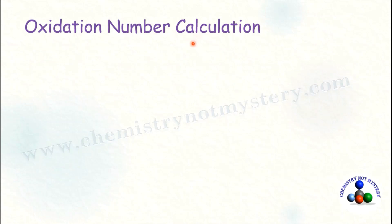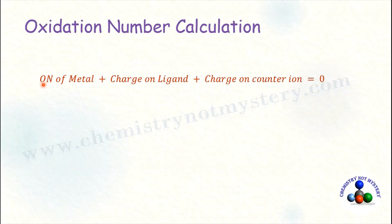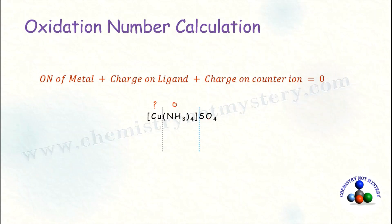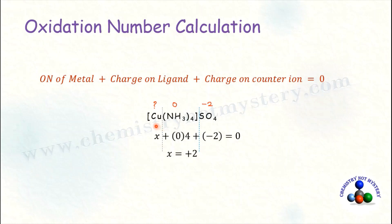Now come to the oxidation number calculation of the central metal ion. You have to use the formula: oxidation number of metal + charge on the ligand + charge on the counter ion = 0. For example, copper is the central metal ion, ammonia is the ligand, and sulphate is the counter ion. Ammonia is a neutral ligand, so its charge is zero. Sulphate has a charge of minus two. The equation becomes x + (0 × 4) + (−2) = 0, giving x = +2. The oxidation number of copper is +2.